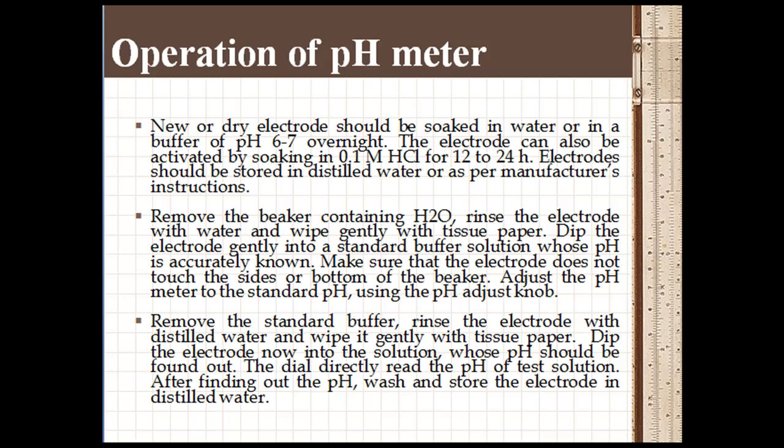Remove the beaker containing water, rinse the electrode with water and wipe gently with tissue paper. Dip the electrode gently into a standard buffer solution whose pH is accurately known. Make sure that the electrode does not touch the sides or bottom of the beaker. Adjust the pH meter to the standard pH using the pH adjustment knob.